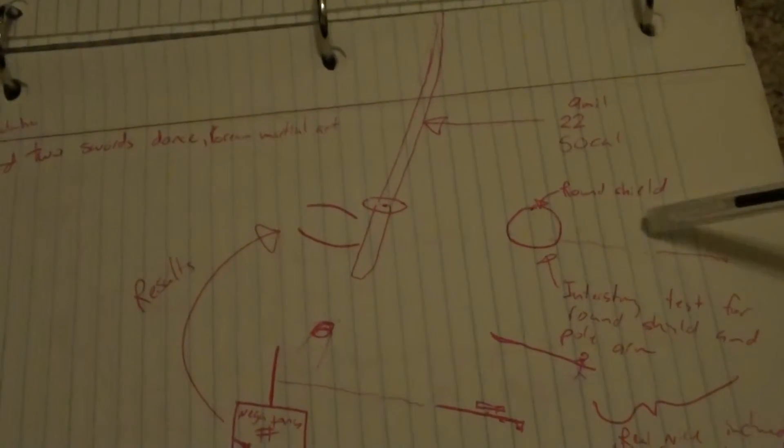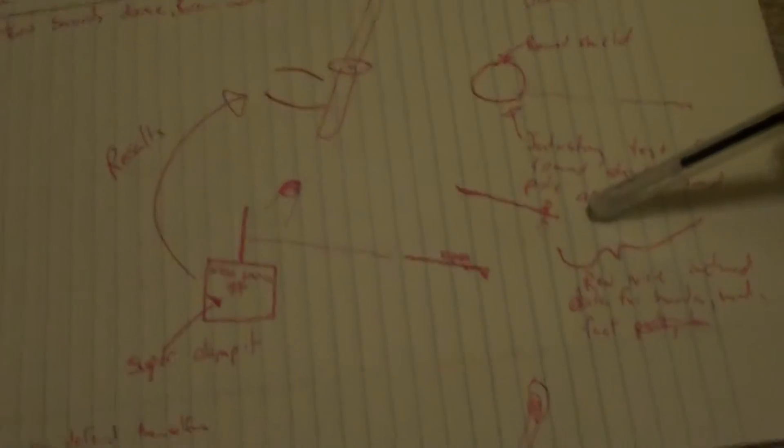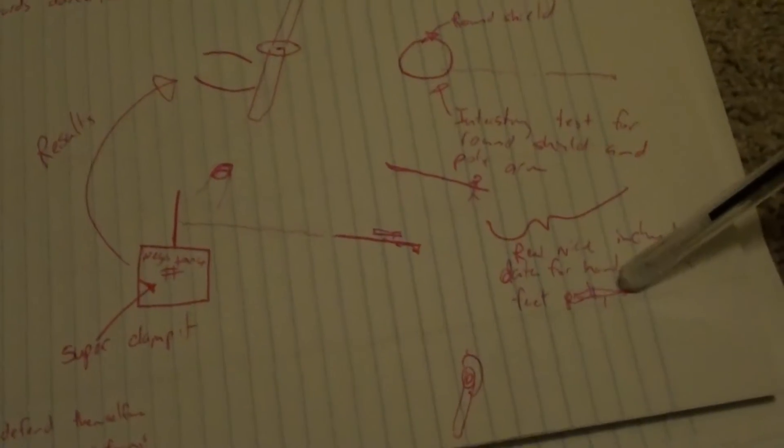It would be neat to have that information for a round shield, a pole arm, and possibly even like a human fist.